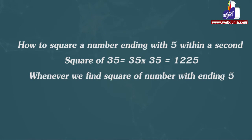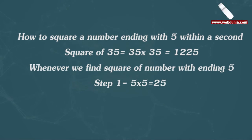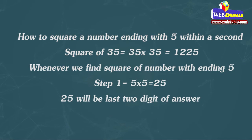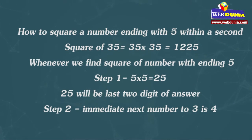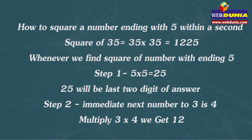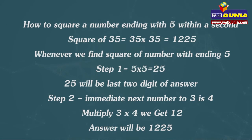Whenever we find square of a number ending with 5, Step 1: 5 multiplied by 5 equals 25. 25 will be the last two digits of answer. Step 2: Immediate next number to 3 is 4. Multiply 3 by 4 equals 12. So the answer will be 1225.